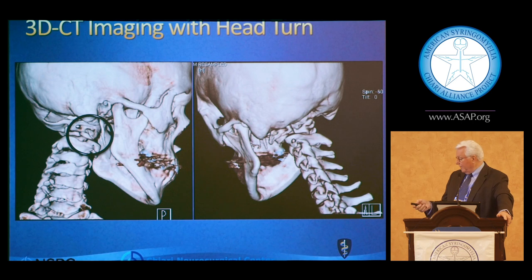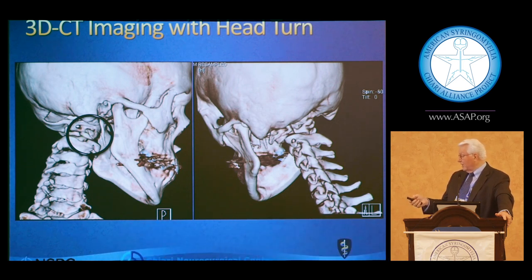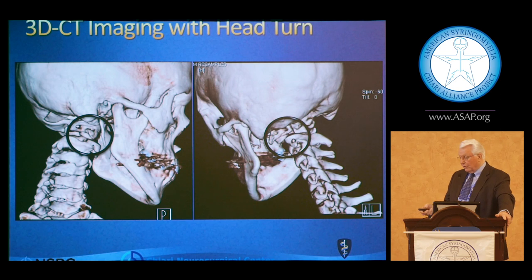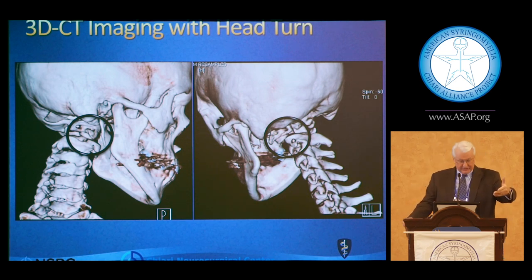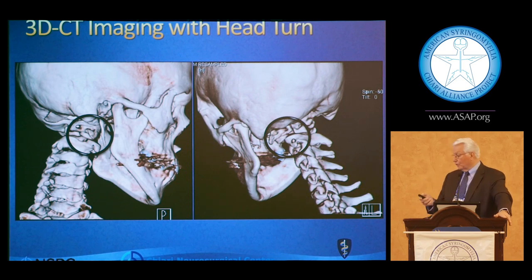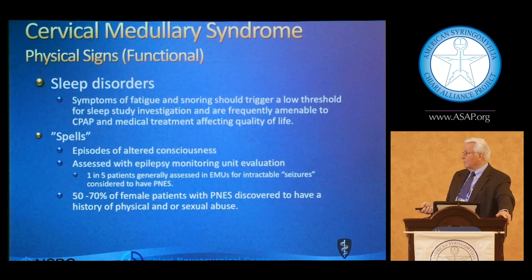Instability can come in at several areas. Here you can see there's unroofing at C1-C2 with almost 80% of facet offset on 60-degree rotation to either side — C1 overriding C2. As Dr. Bolognese described, you can have different kinds of motion: flexion and extension abnormalities, and rotational instability. On invasive cervical traction techniques, where you actually try to extract the head, you can see stretching of the BDI or the Basion-Dental Interval.